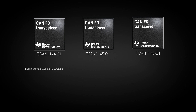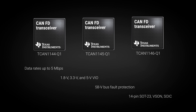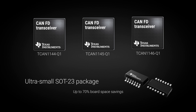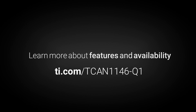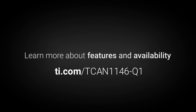All three CAN-FD transceivers support data rates up to 5 megabits per second, 1.8V to 5V VIO, 58V bus fault protection, and are available in multiple packages, including an ultra-small leaded package. The SOT23 package offers up to 70% space savings over a standard SOIC package, while retaining the device leads to simplify automated optical inspections. The TCAN114X Q1 family of CAN-FD transceivers offers industry-leading CAN-FD performance, protection features, and partial networking support, while giving designers unmatched flexibility. Visit ti.com/TCAN114X Q1 to learn more and start designing.